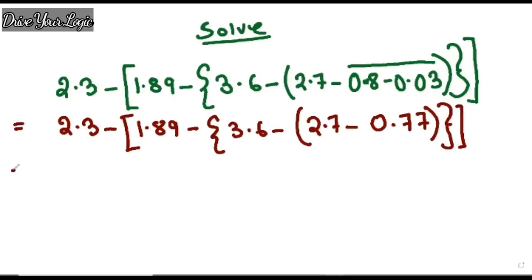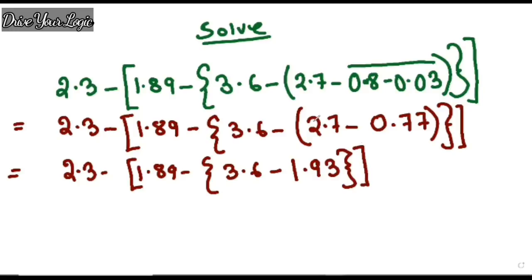Put the bracket, don't forget to give the bracket. Then you write down 2.3 again and just line by line you write everything. Now what you will do: 3.6 minus solve the inside part, so 2.7 minus 0.77. What will be your answer? 1.93. Clear, so just put the second bracket and third bracket. Your first bracket is over.